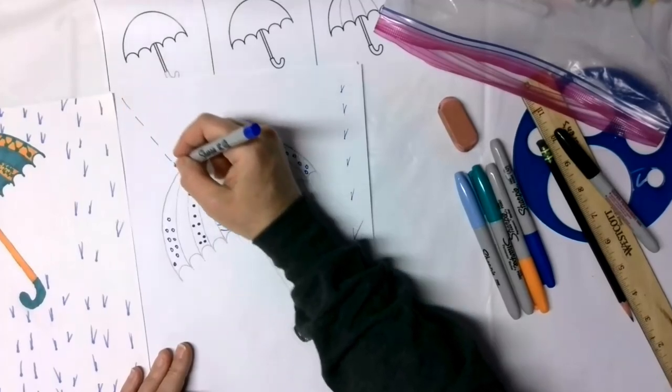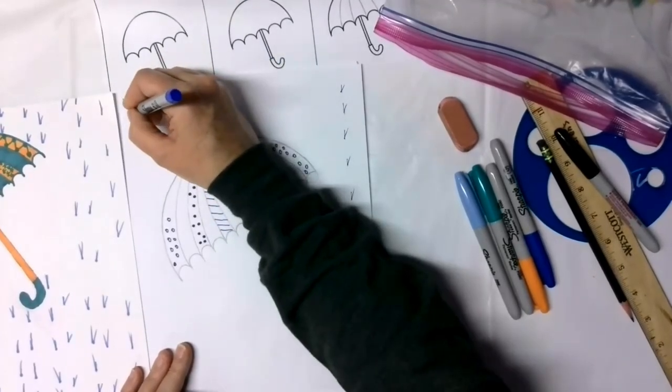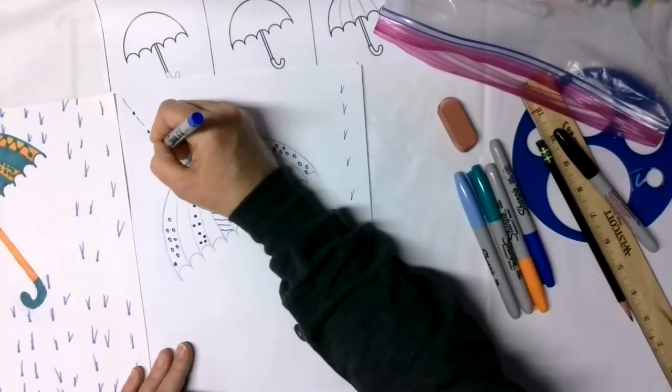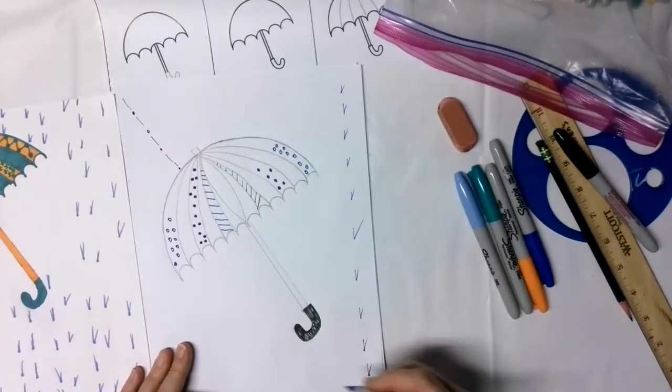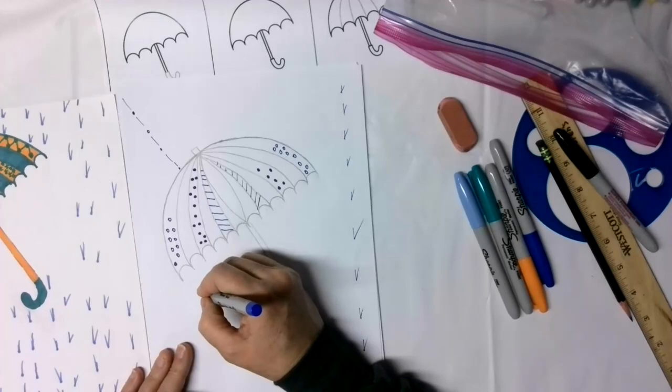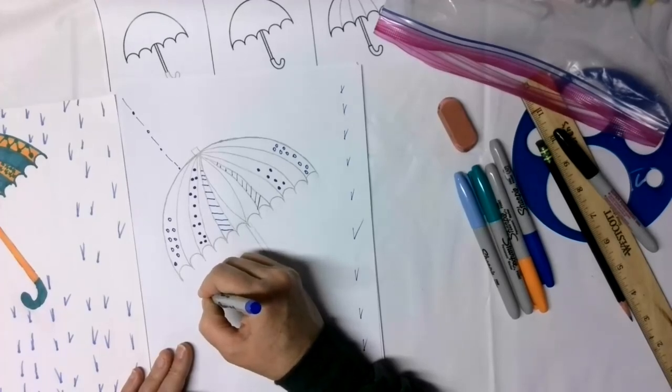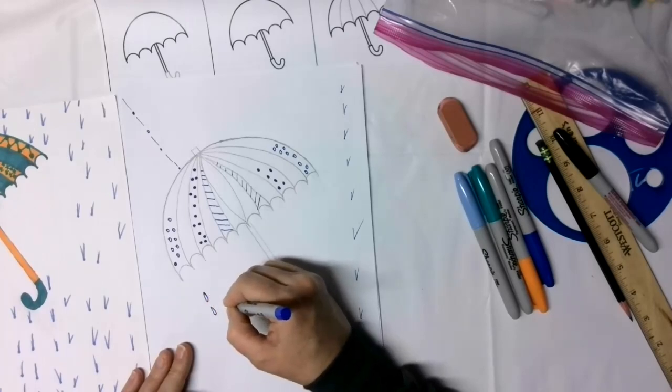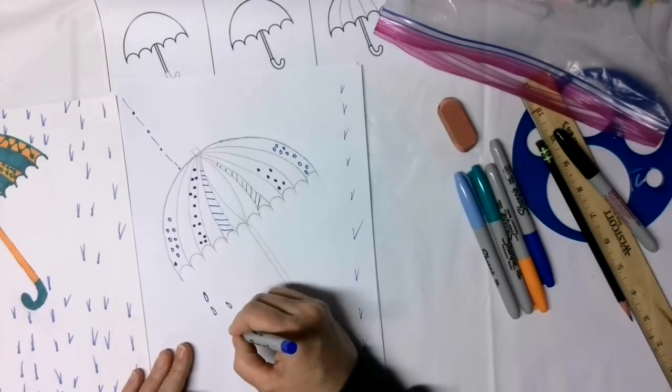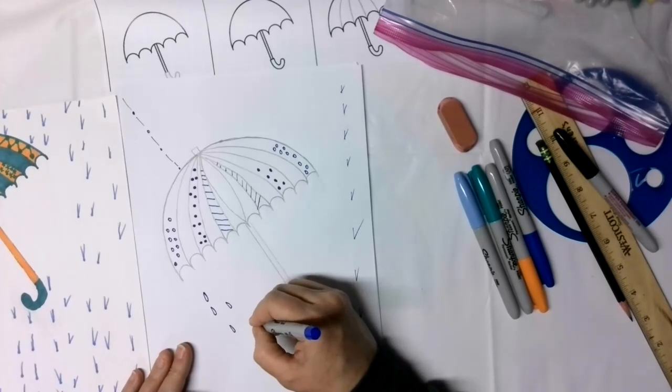If it's coming in at an angle with the wind, the other option is just to do little dots here. And that can illustrate a break in the rain or a pattern. Or if you're very good at actually drawing little teardrop shapes, you can make your rain that way. So there's a few different ways to do that.